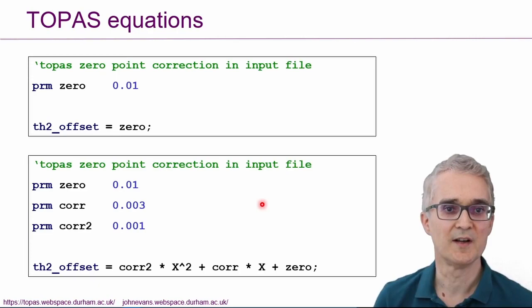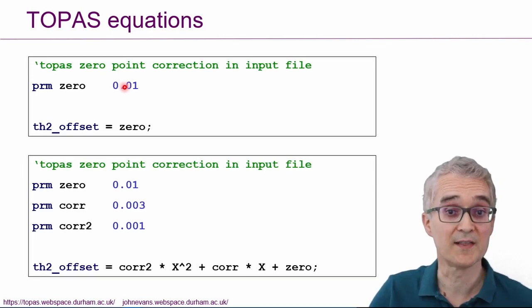So we started off using a built-in TOPAS macro to refine that parameter. Then we went through an example of how you could actually write a little TOPAS equation where you defined your own parameter called zero, you gave it a value, and in TOPAS you wrote an equation that the 2θ offset was equal to the value of that parameter, and you could refine that parameter.